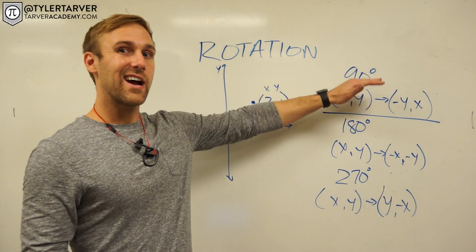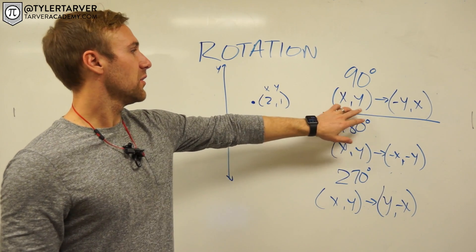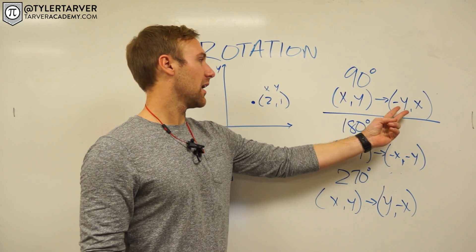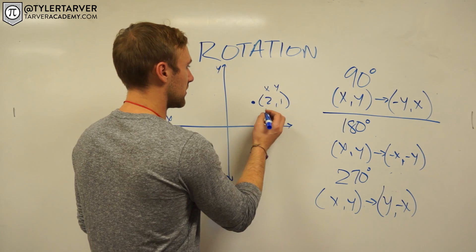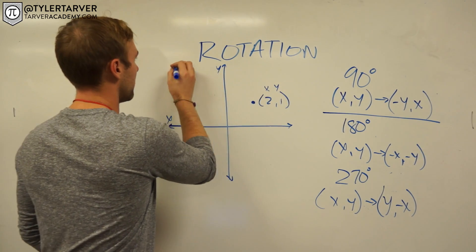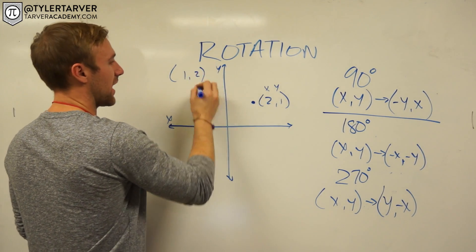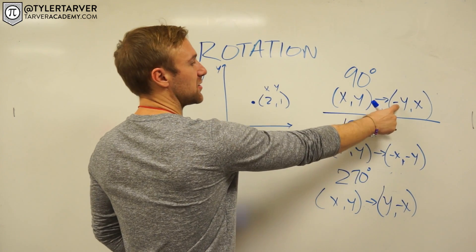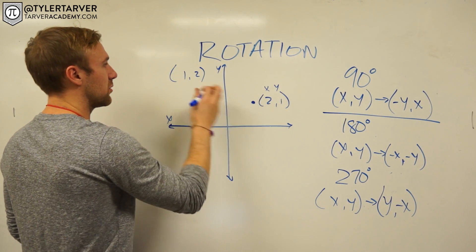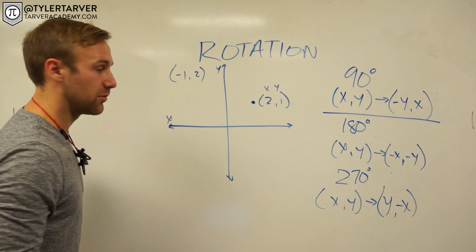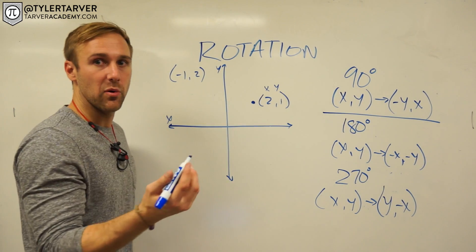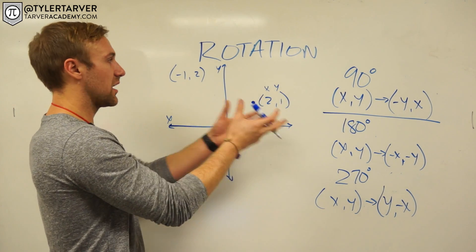To rotate 90 degrees, all I do is I flip my x and y, so I'm gonna flip those so that one goes in the front, my two goes in the back, and then I also make the opposite of whatever the y is. So it's a positive one, now it's gonna be a negative one. Then I can just plot my point. Once I get that coordinate, I can just put it on there. So I go negative one, up two, and that's my rotation.